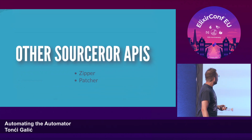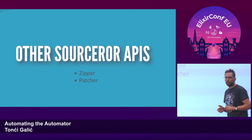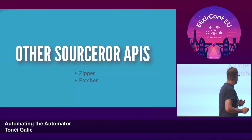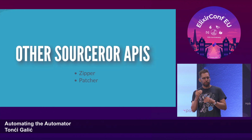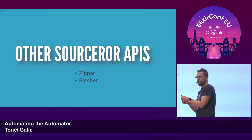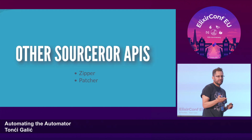Besides that approach, Sorcerer also has other APIs. It has a Zipper, in case you walk a tree and want to go back, look around, see what's left or right. It also has a Patcher API: if you only want to change a few lines in your source code without having the whole document reformatted, you can use the patcher to replace just that part of the string. Most of you probably use a formatter already, so most of you likely won't need the Patcher API.